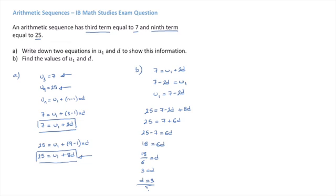Now to find the value of u1, the first term, we just go back to the expression we found. We're going to replace d by 3, so u1 equals 7 minus 2 times 3. That's u1 equals 7 minus 6. Finally, u1 equals 1.